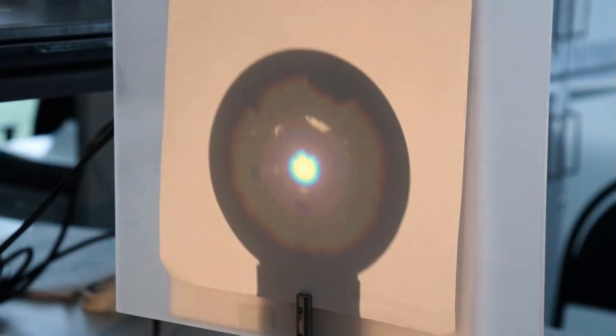First we use white light of an incandescent lamp and observe how the color of the focus changes while moving the Fresnel zone plate.